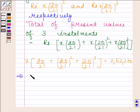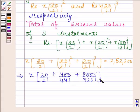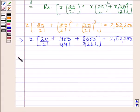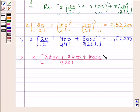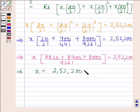This implies x into 20 by 21 plus 400 by 441 plus 8,000 by 9,261 equals to 252,200. And this implies x is equal to 252,200 into 9,261 divided by 8,520.